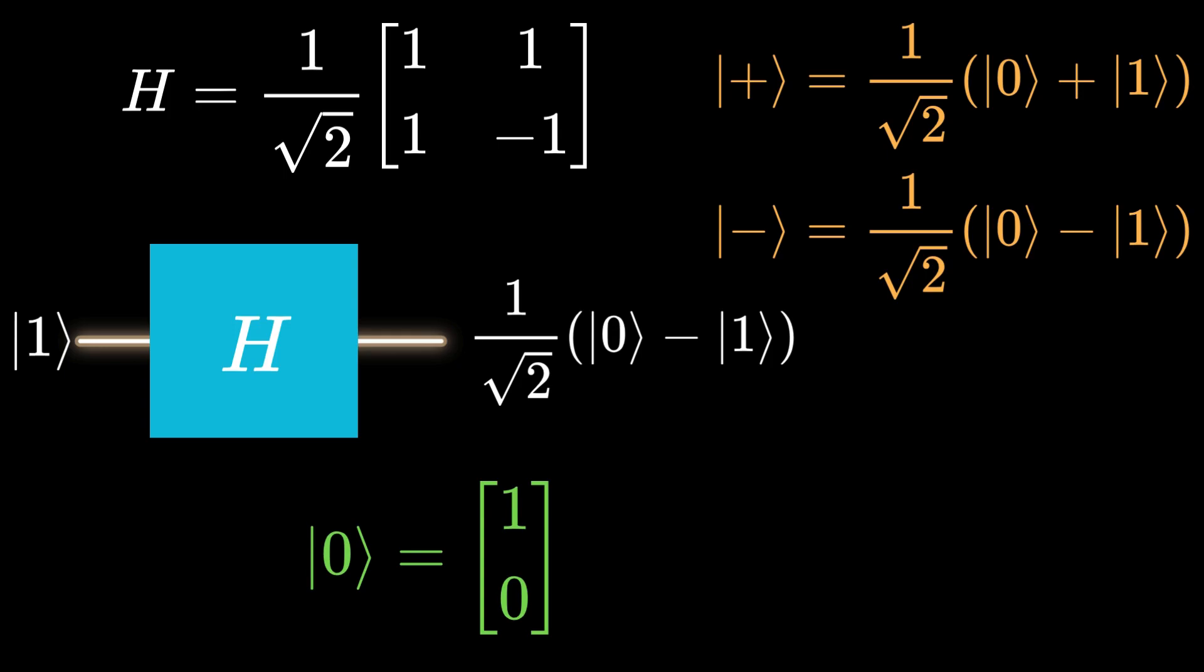Also, remember that cat0 is a 2 by 1 column matrix with entries 1 and 0, while cat1 is a 2 by 1 matrix with entries 0 and 1. Note that cat0 is not the vector 0, which has all entries as 0.